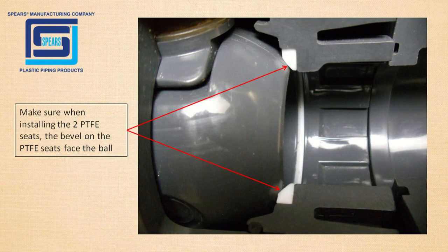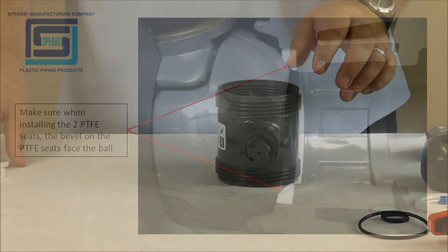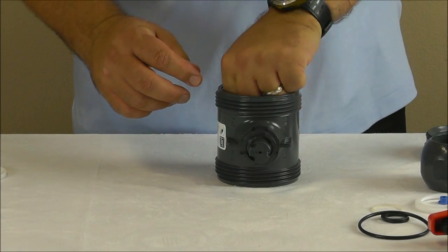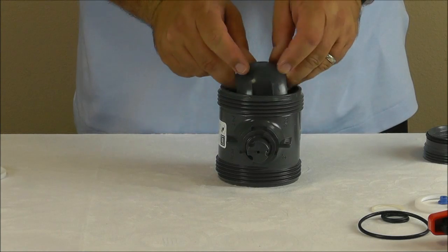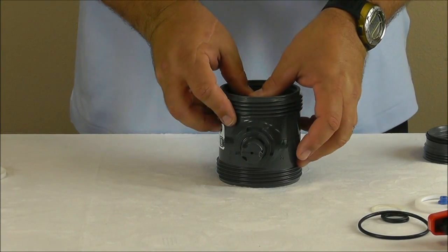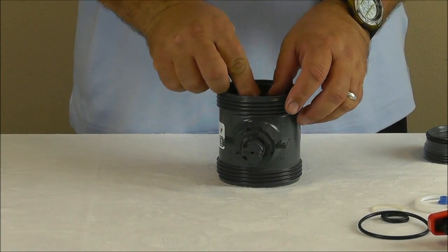Make sure when installing the PTFE seats, the bevel on the PTFE seats face the ball. Install one of the new PTFE seats and then reinsert the ball by lining up the stem drive and slot at the top of the ball. Install the second PTFE seat.